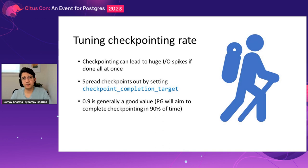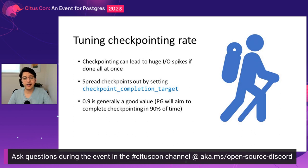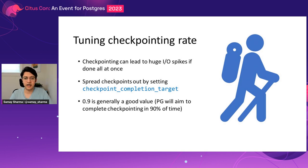Once checkpoints are triggering at the right pace, it's important to have them proceed at the right rate. Checkpointing is IO intensive, so doing all the IO at once can lead to IO stalls. Postgres provides the checkpoint_completion_target parameter, which tells Postgres what percentage of the checkpoint timeout it should aim to complete the checkpoint within. For example, with a five-minute timeout and 0.9, Postgres tries to complete each checkpoint in four and a half minutes. The default in current Postgres versions is also 0.9, which is recommended.